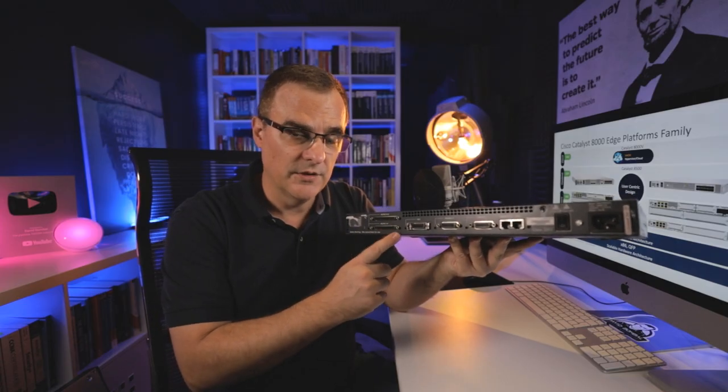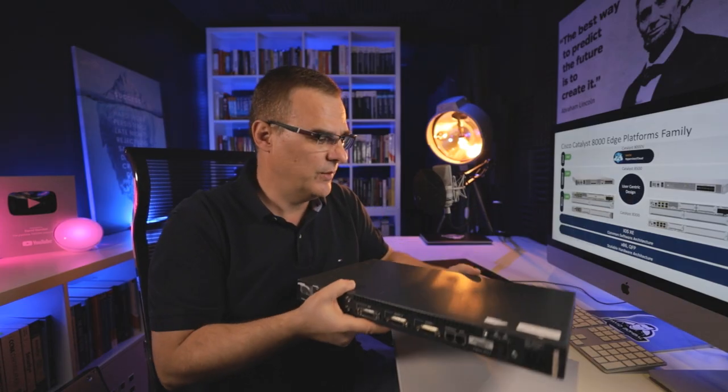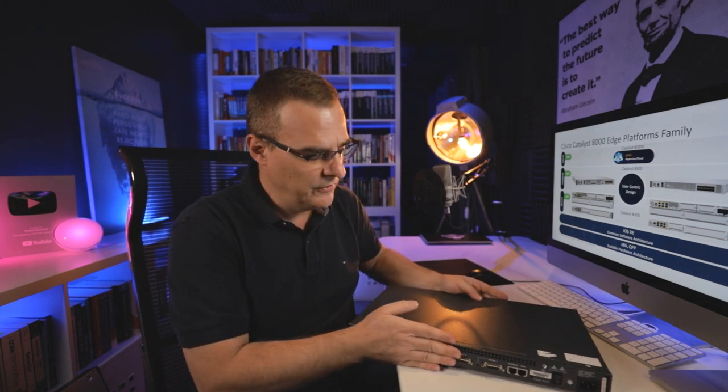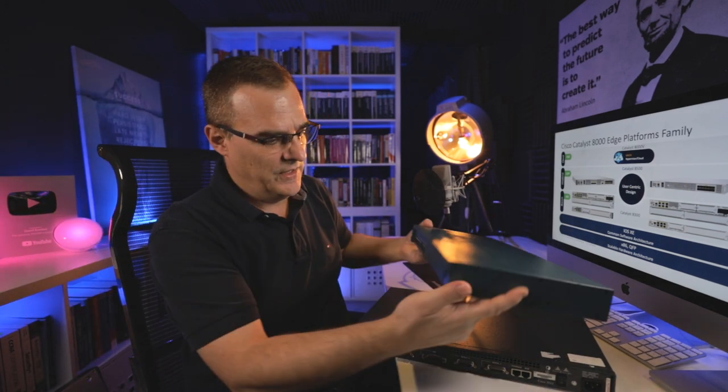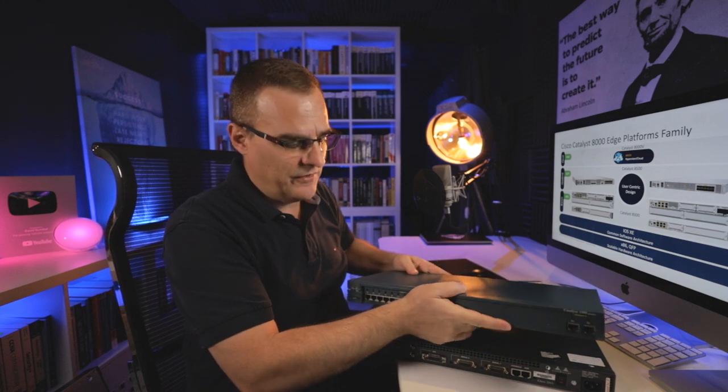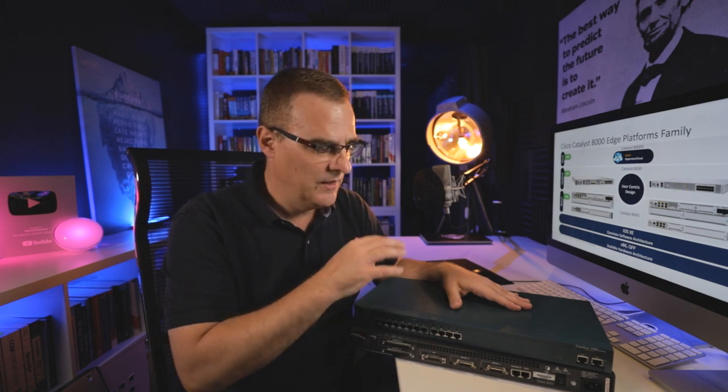Many years ago, Cisco sold devices like this 2500 series router — a lot of people still use them for labs using the async ports. This is a classic router. And here we have a 1900 series switch, a really old switch from the 1990s. But it was clear-cut: this is a router, and this is a switch. This performed Layer 2 switching; this performed routing.